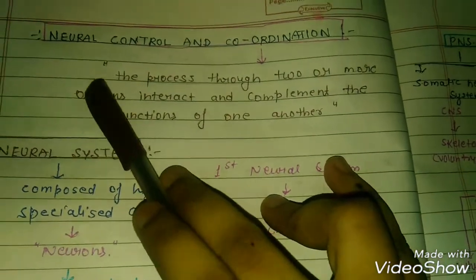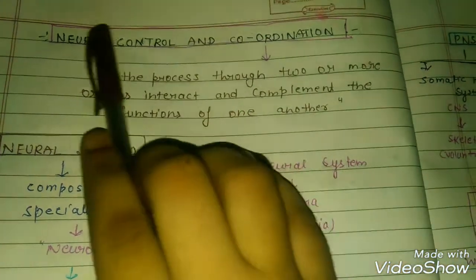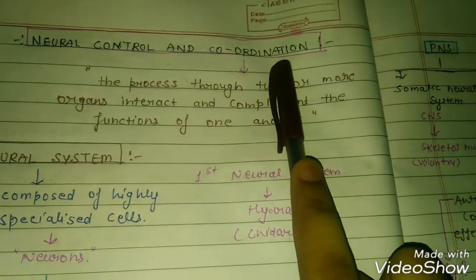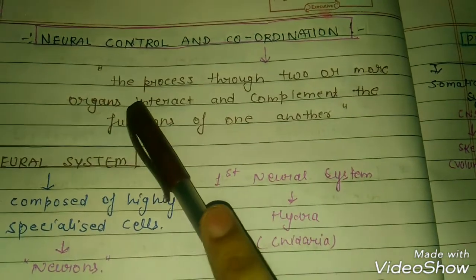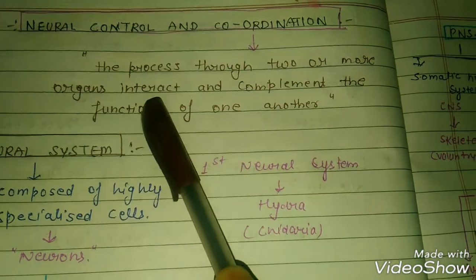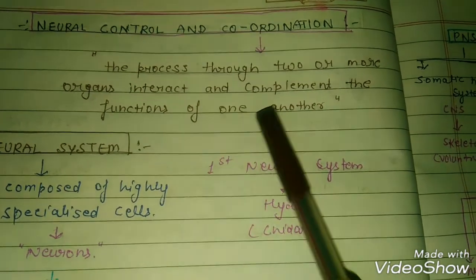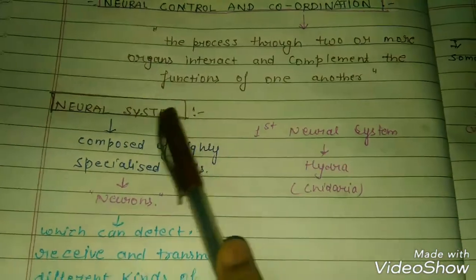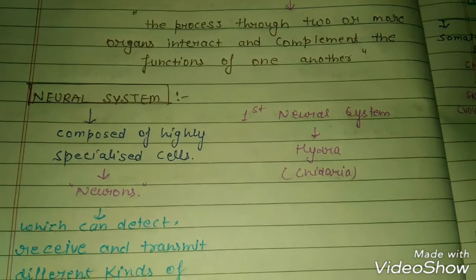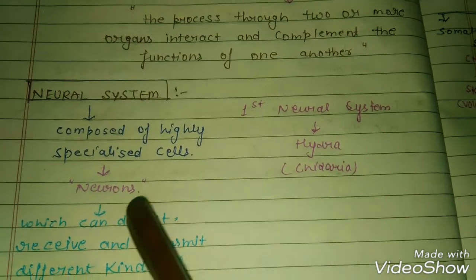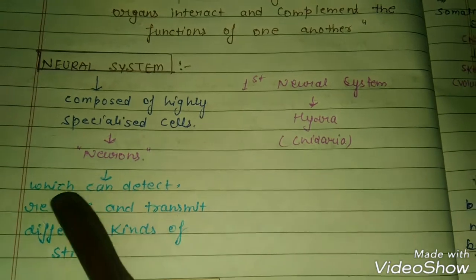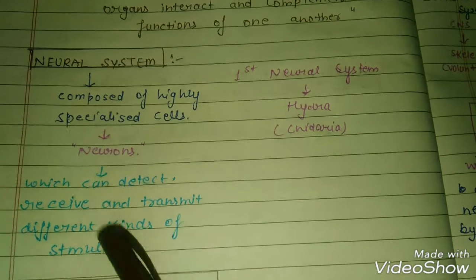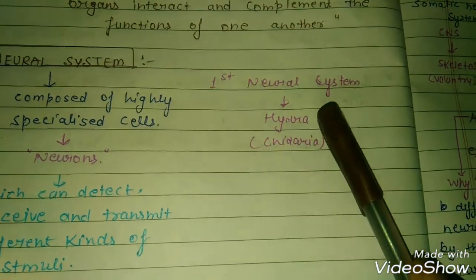Let's start by understanding what we are going to read. Coordination means the process through which two or more organs interact and complement the functions of one another. The neural system is composed of highly specialized cells called neurons. Neurons function to detect, receive, and transmit different kinds of stimuli. The first neural system appeared in Hydra.